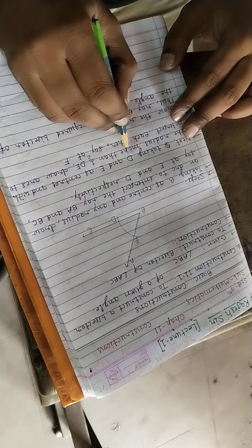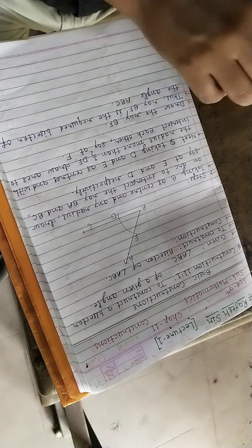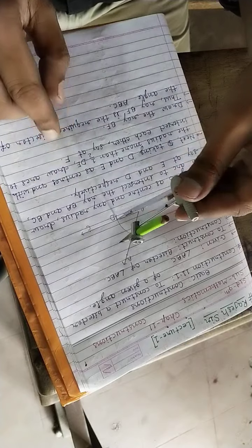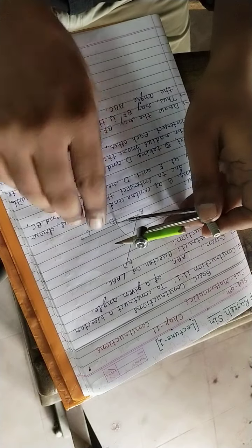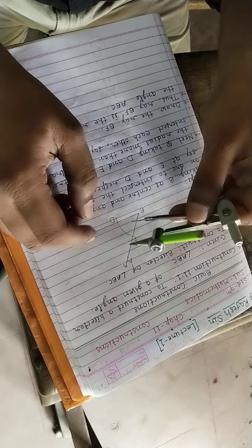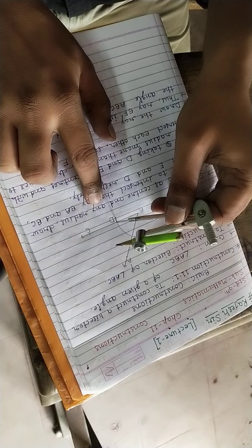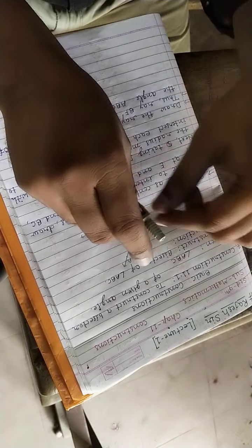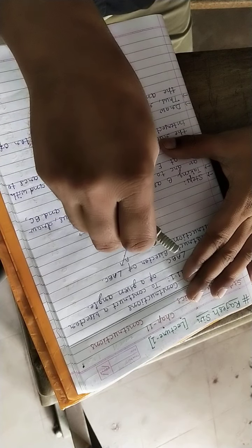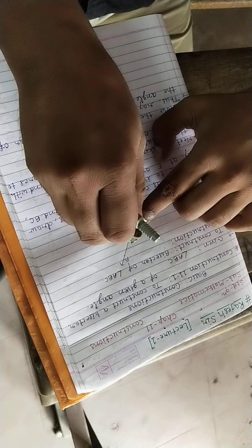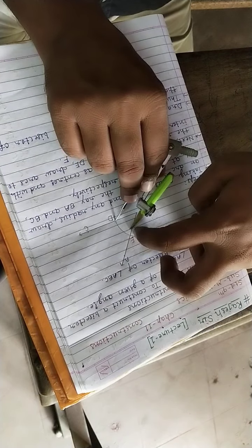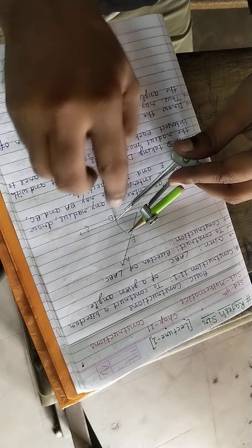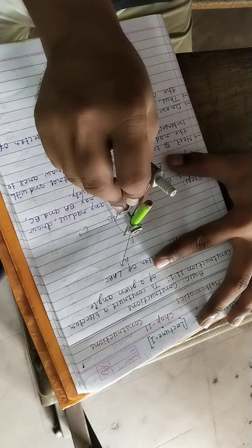Now next, taking the center as D and E respectively. We have to take our rounder on D first. Take the center as D, and how much radius? More than half of DE. You know that DE distance, half is this, more than that. We have to take the radius more than half distance of DE. Take the center as D and draw an arc here.